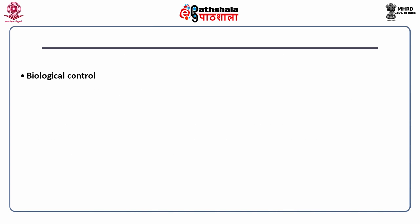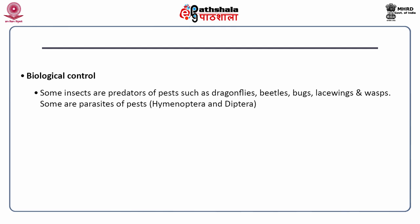Insects are also used in biological control. Some insects are predators of pests such as dragonflies, beetles, bugs, lacewings and wasps. Some are parasites of pests, which includes insects from the orders Hymenoptera and Diptera.